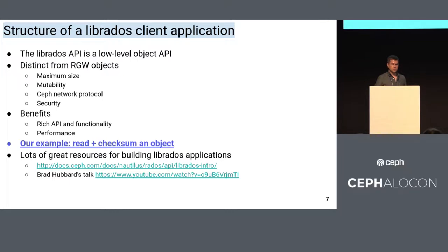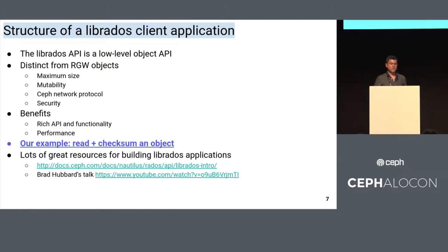Let's talk about a librados example. Librados is an API for accessing the low-level object interface. It's different from the objects we talk about with RGW objects. RADOS objects have maximum sizes and different mutability properties. You don't access librados through HTTP — you access it through lower-level interfaces. What you get by using librados is a very rich API and lots of functionality that can give you better performance when your application can take advantage of it.